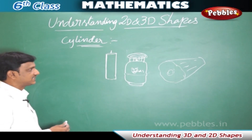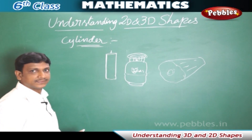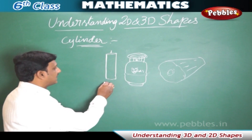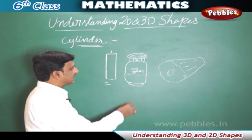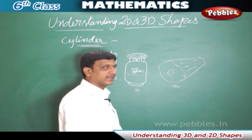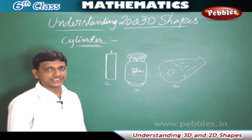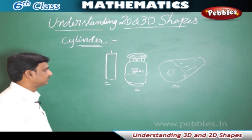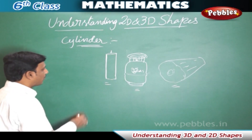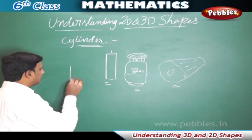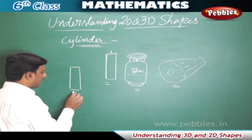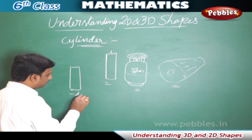The next 3D shape we are going to see is the cylinder. Objects like a candle, a gas cylinder, and a wooden log are in cylindrical shape. This cylindrical shape has a height and a diameter.